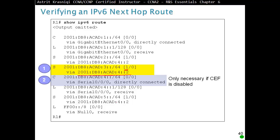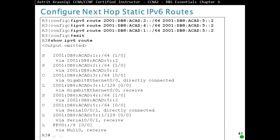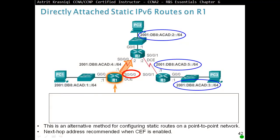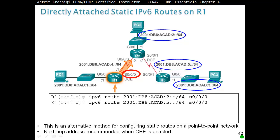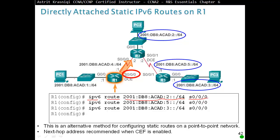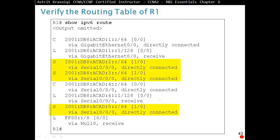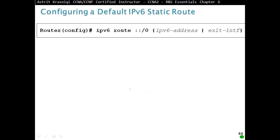If CEF is disabled, we use our exit interface as a directly attached static route. Configure next hop IPv6 static route: 'ipv6 route', destination address, next hop IP address. For directly attached static routes on a point-to-point network, the next hop address is recommended with CEF. The command starts with 'ipv6 route', then destination IPv6 address, then the exit interface. When we do 'show ipv6 route', it shows directly connected, but the administrative distance in IPv6 is still 1.